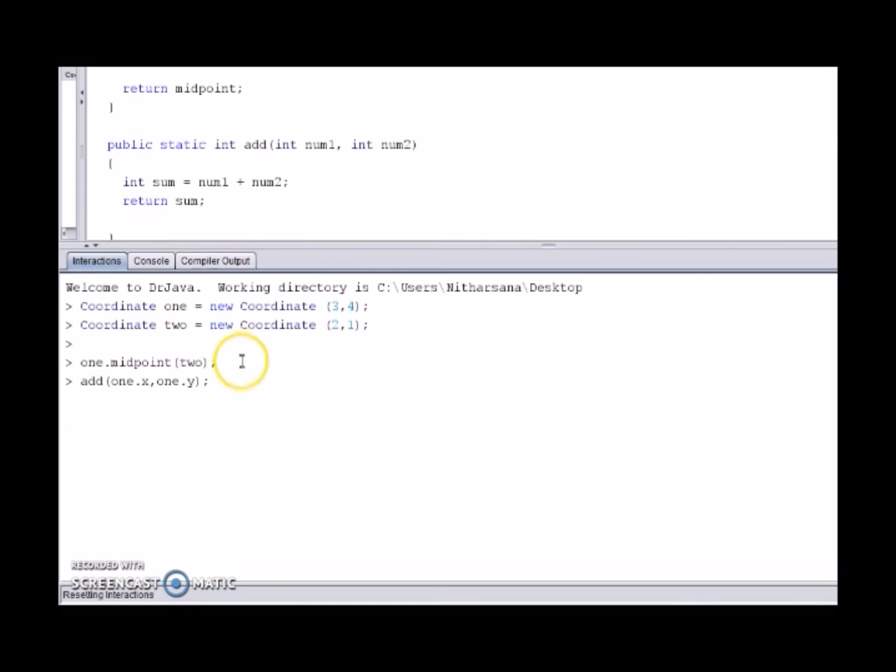The second and probably the most common way is to write the class identifier or class name of which the class method belongs to. So in this case Coordinate dot method name which is add and then parameter arguments which in our example is 1 dot x and 2 dot y.